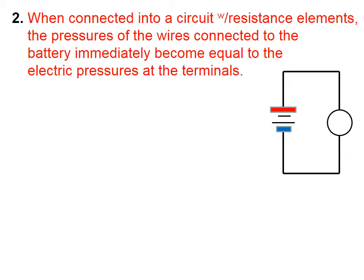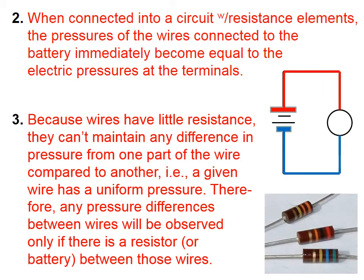So in this schematic diagram we saw earlier, we have the high pressure positive terminal and the low pressure blue negative terminal. Statement number two says that the top wire in this circuit will immediately acquire an electric pressure equal to that at the positive terminal of the battery, and this wire down here will immediately acquire the low pressure by being connected to the negative terminal of the battery. Because wires have little resistance, they can't maintain any difference in pressure from one part of the wire compared to another — a given wire has a uniform pressure.